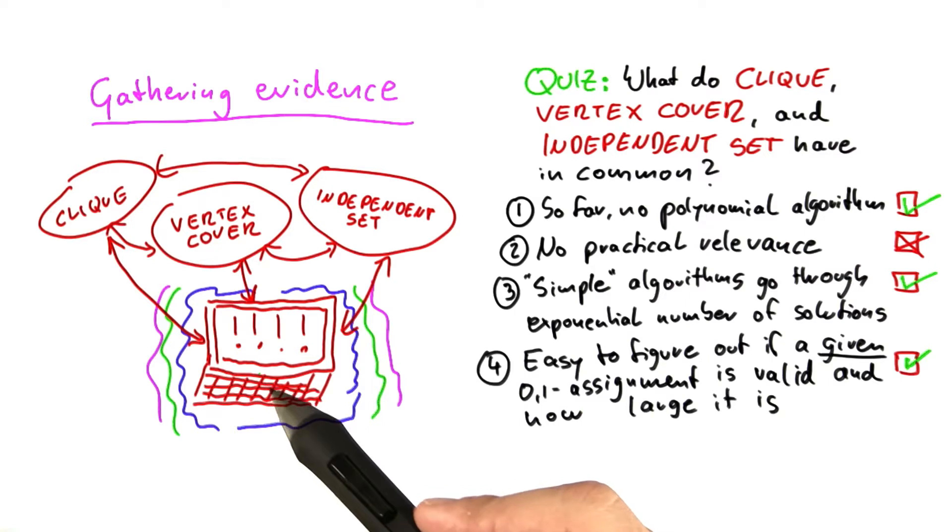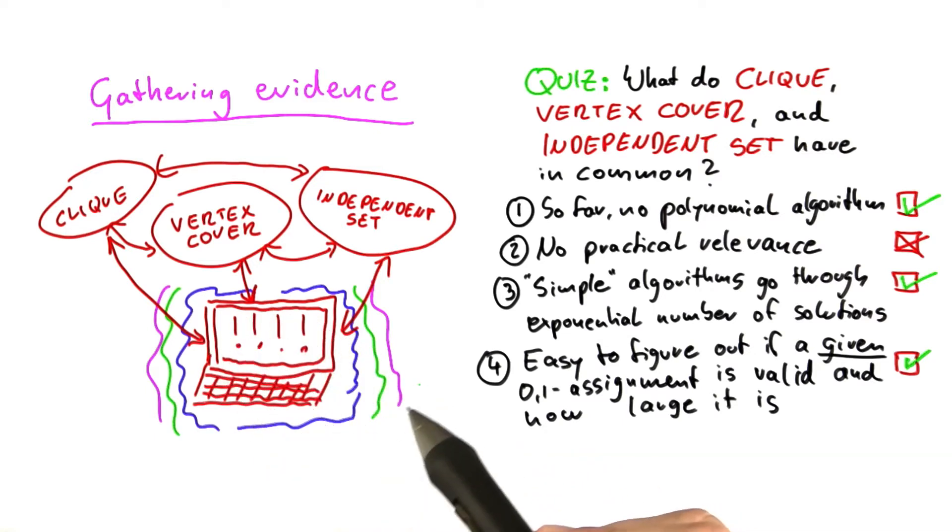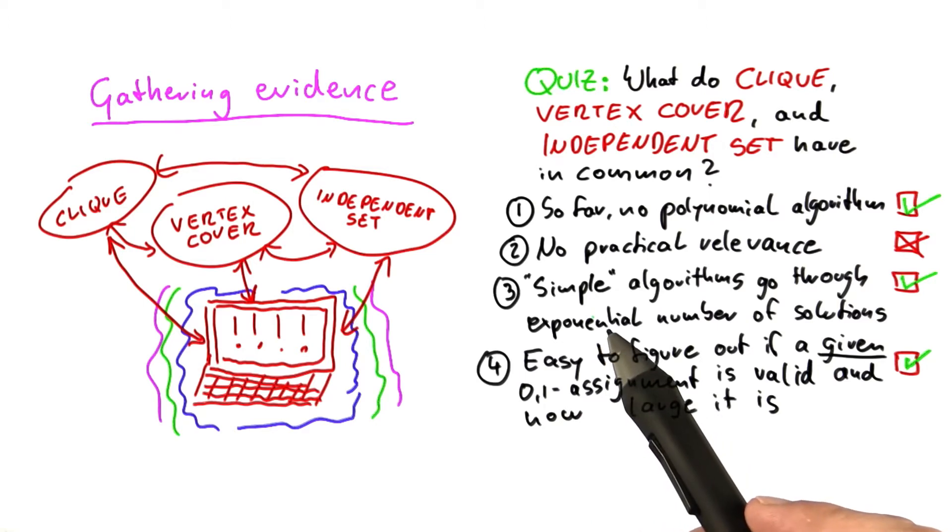Now I haven't told you yet what this super powerful computer down here in the left corner is actually capable of. The ability that this computer has is that it can help us figure out the best possible 0 and 1 assignment to the vertices without actually going through them.